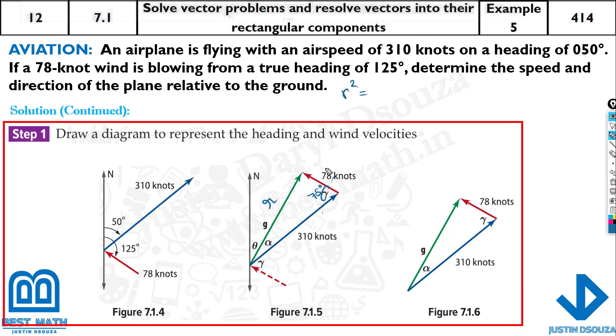So r squared will be equal to the sum of these two sides. Now it's not a written exam, so I'll directly write the values here. 78 squared plus 310 squared minus 2 times 78 times 310 times cosine 75 degrees. So if you take the square root of this, you get r, the resultant.